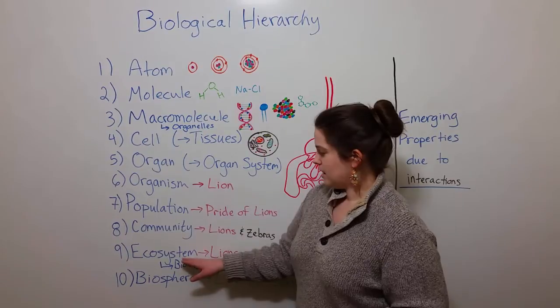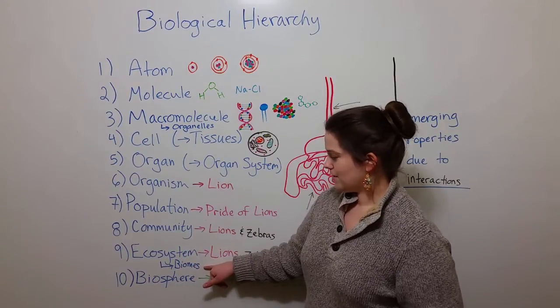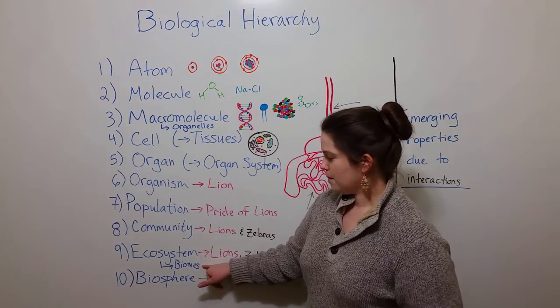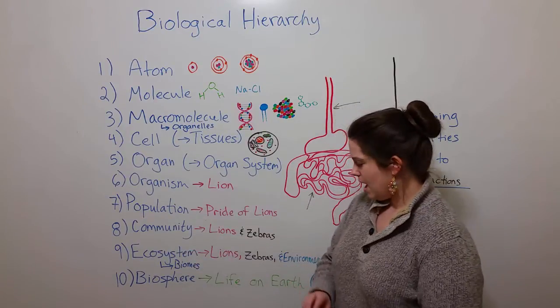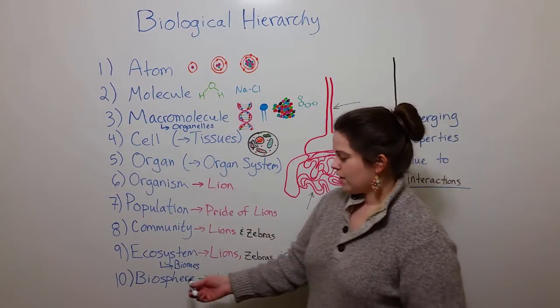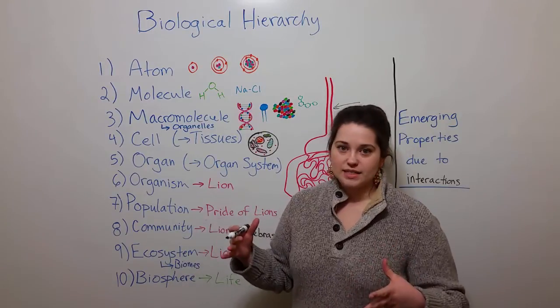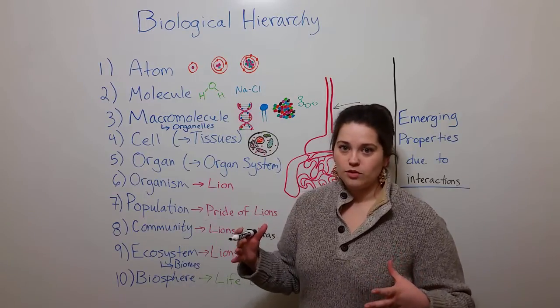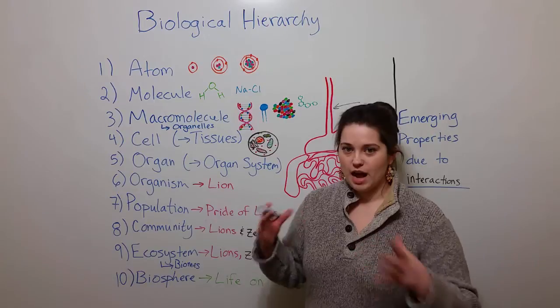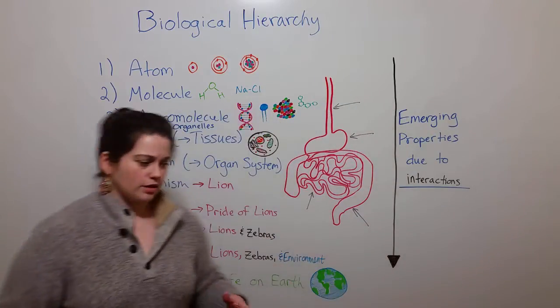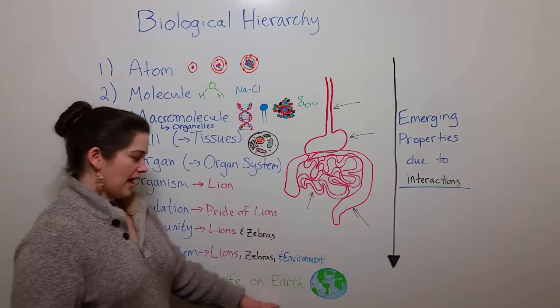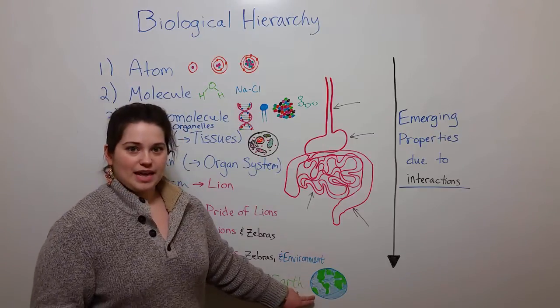Some lists then include this additional level in the biological hierarchy, biomes, which are collections of ecosystems. And finally, the very greatest level of the biological hierarchy, the one that encompasses everything else, is the biosphere. And the biosphere refers to all life on our planet Earth.